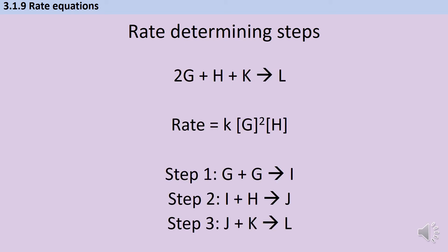Any reactant featuring in the rate equation has to be part of the rate determining step, but sometimes this can be slightly camouflaged. In this hypothetical reaction G, H, and K react to form L. The rate equation has G as second order and H as first order, so I'm looking for a step involving both G and H. Here's H in step two and G in step one — I don't have a single step with both. But G reacted to make intermediate I, and I is present in step two. You can substitute in two moles of G for the I, so G effectively counts as part of step two because it was necessary to make one of step two's reactants.